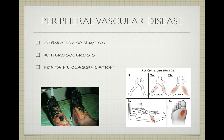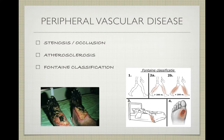The Fontaine classification has four stages. Stage 1: the patient is asymptomatic or has non-specific symptoms; on physical examination you may feel cold extremities and weak or absent pulse, but the patient is still quite healthy. Stage 2 is called intermittent claudication, where the patient has pain after walking a certain distance — in stage 2a it's more than 200 meters and in stage 2b it's less than 200 meters.